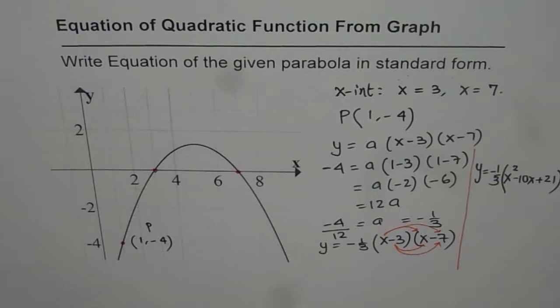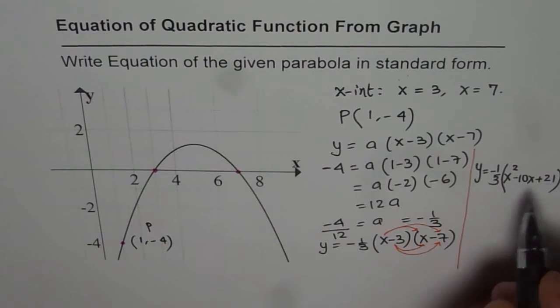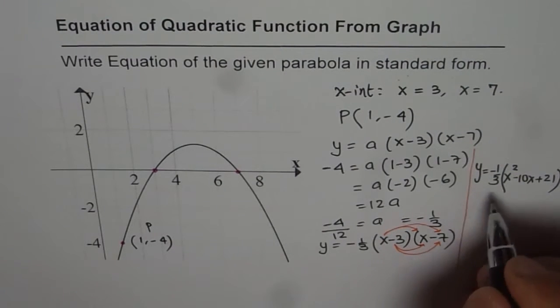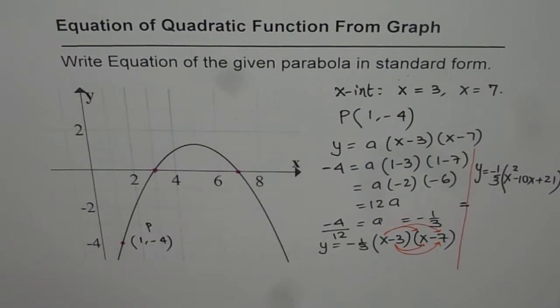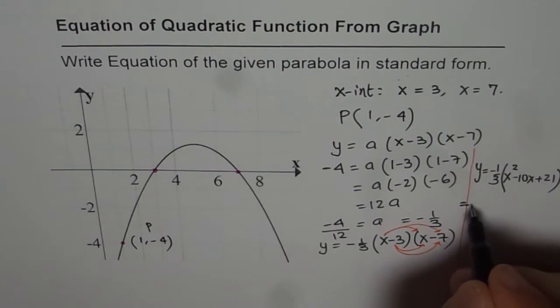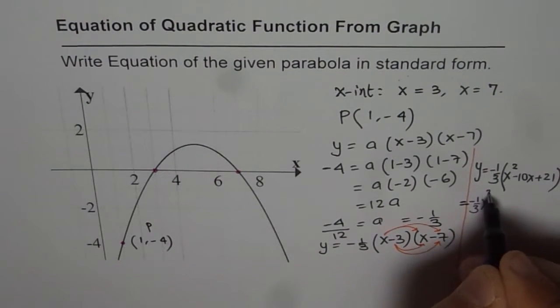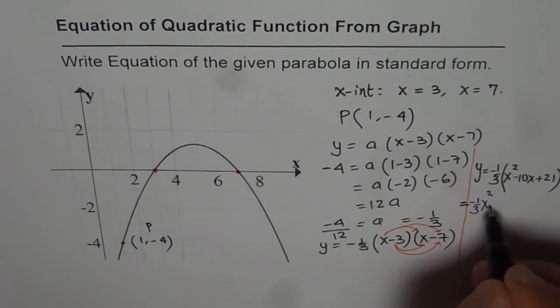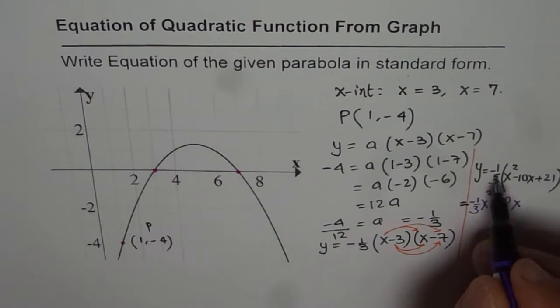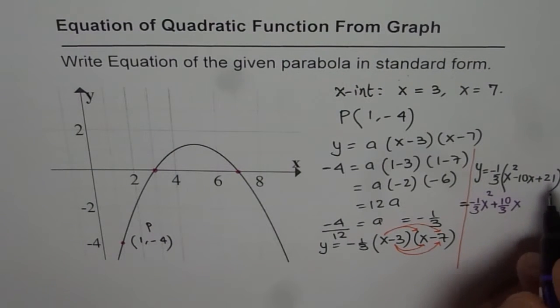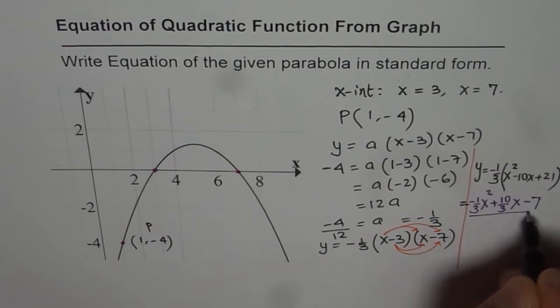And we open the bracket to write this in standard form. So we get -1/3x² plus 10/3x and -1/3 times 21 will be -7. So that becomes our answer.